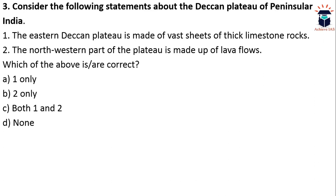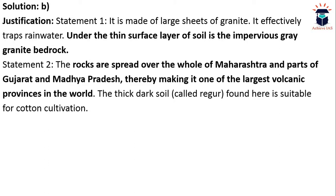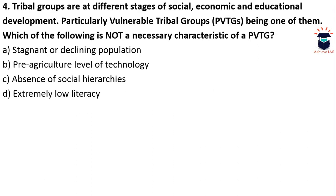Next, consider the following statements about the Deccan Plateau. Statement 1: the eastern Deccan Plateau is made of vast sheets of thick limestone rocks. Statement 2: the northwestern part of the plateau is made up of lava flows. Only the second statement is correct — the answer is B. Statement 1 is incorrect because it is made of large sheets of granite, not limestone, which effectively traps rainwater. The impervious gray granite bedrock lies under a thin surface layer of soil. These rocks spread over the whole of Maharashtra and parts of Gujarat and Madhya Pradesh, making it one of the largest volcanic provinces in the world. The thick dark soil found here is suitable for cotton cultivation.